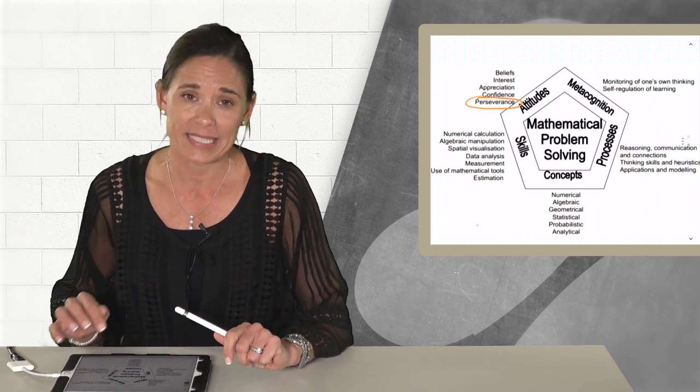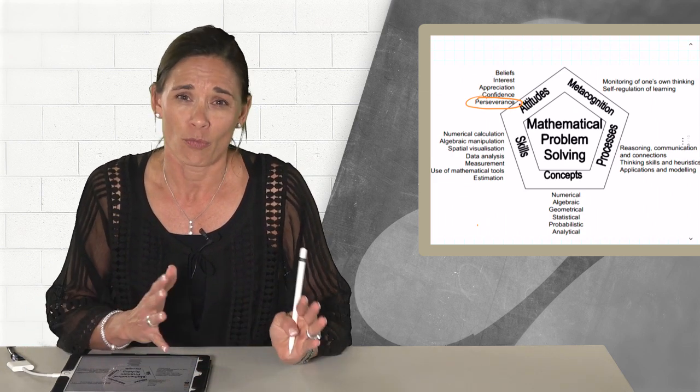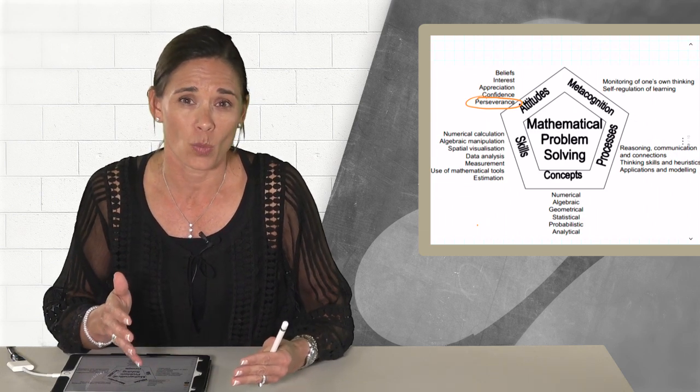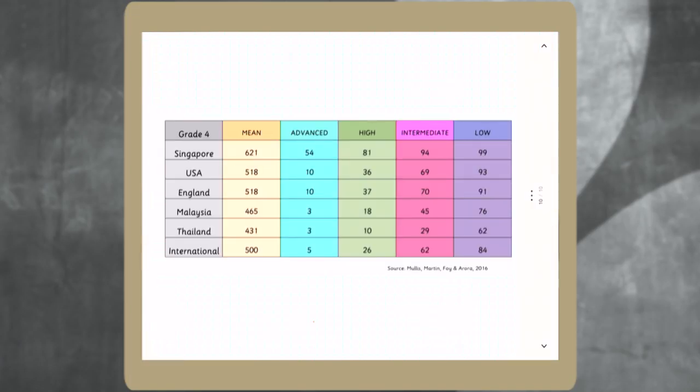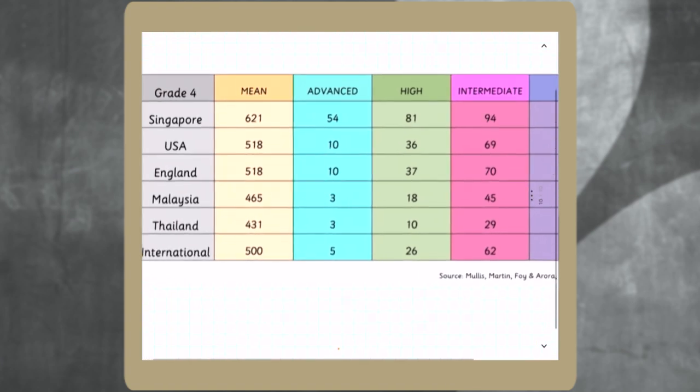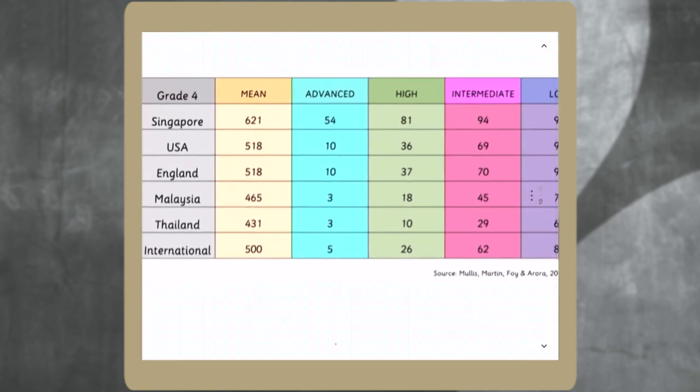So Singapore took those ideas where rote procedural mathematics was the way they thought mathematics should be taught. Look at Malaysia's scores in referring back to this idea of rote memorization. Singapore will tell you that they believe if they would not have changed the way that they taught math, remember that rote procedures, make the numbers bigger, that they would still be scoring the way Malaysia is scoring. Instead they decided to make those changes.